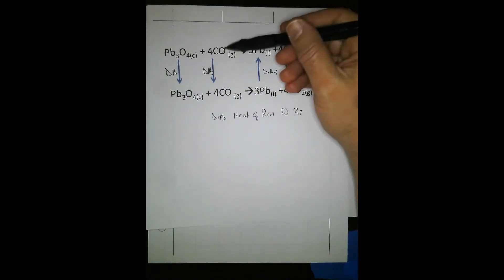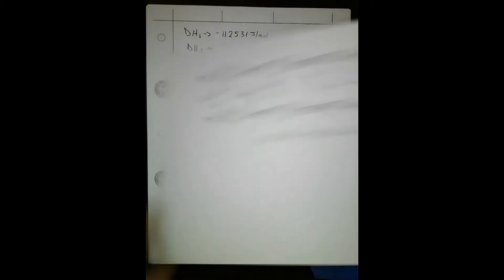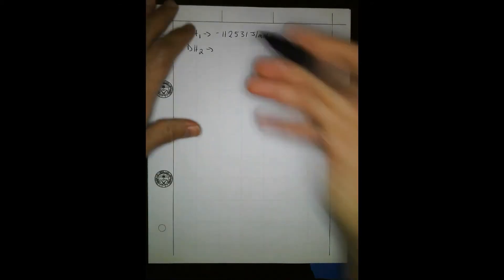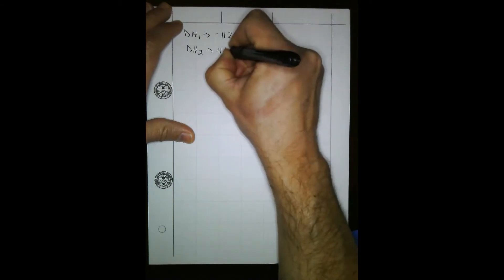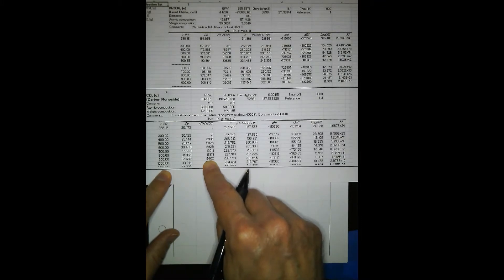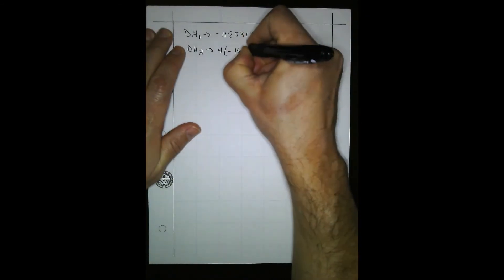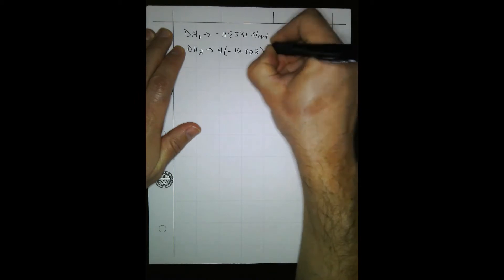Delta H2 — we have our carbon monoxide table. We're cooling carbon monoxide from 900 to 298. So we know the sign is going to be negative. We also know from the chemical equation that we have to multiply our value by four — that's a big deal. So Delta H2 is 4 times negative 18,402 joules per mole.